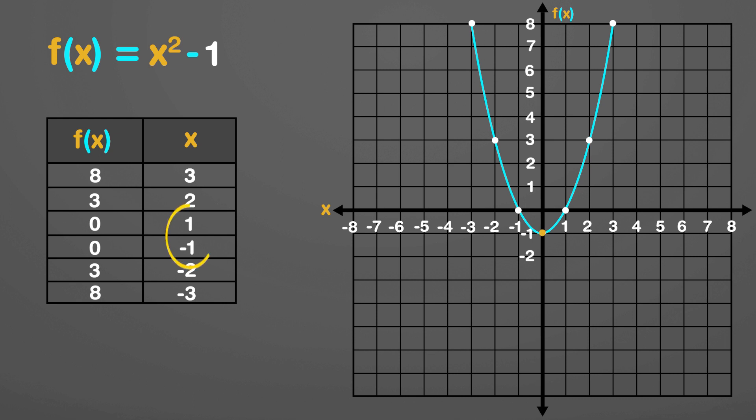x values 1 and minus 1 are of special interest as they give f equal to 0. We also see that these are the two points where the parabola cuts the horizontal axis. The x values where f is 0 or where the curve cuts the horizontal axis are called the roots or solution to the function f equals x squared minus 1.